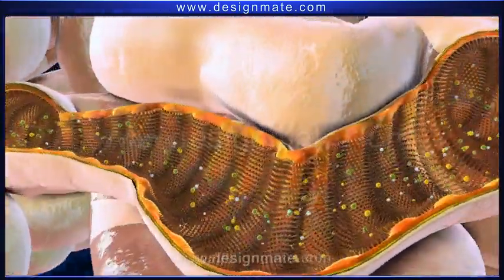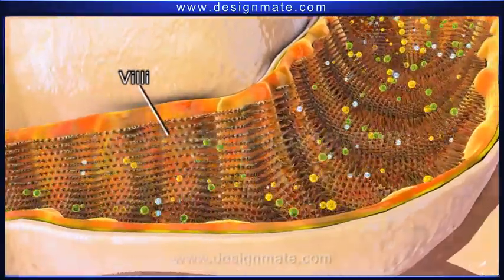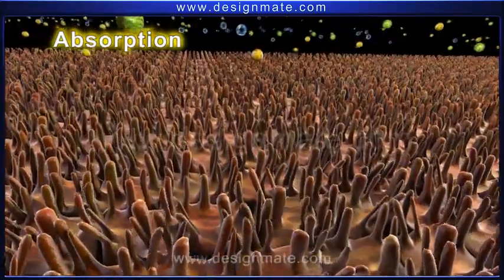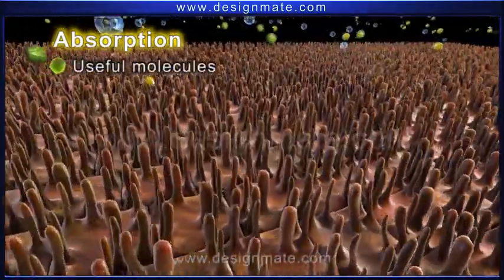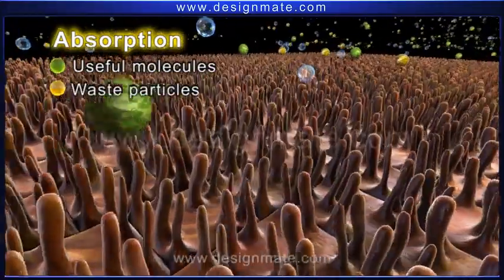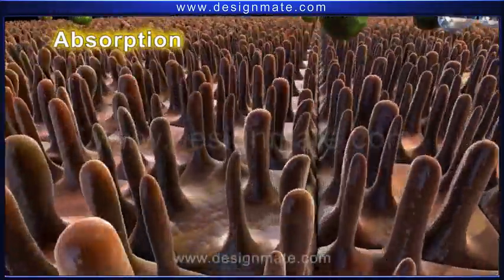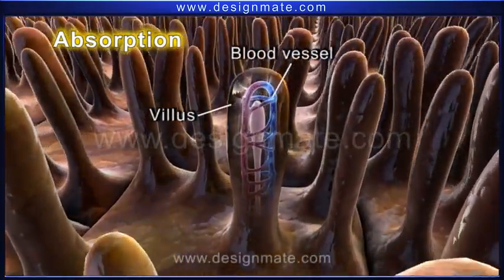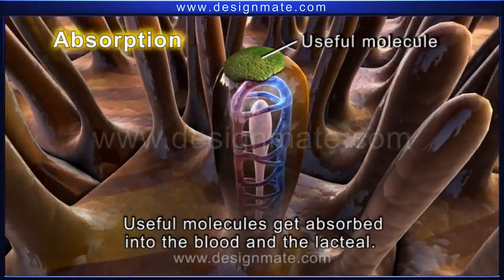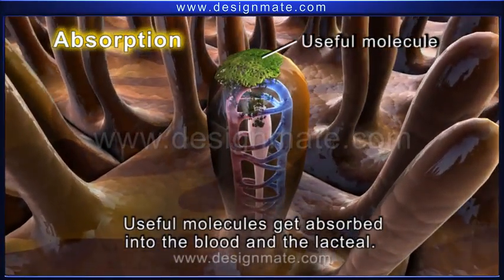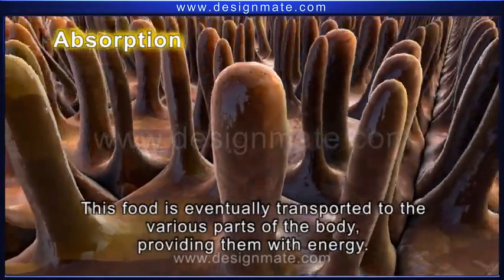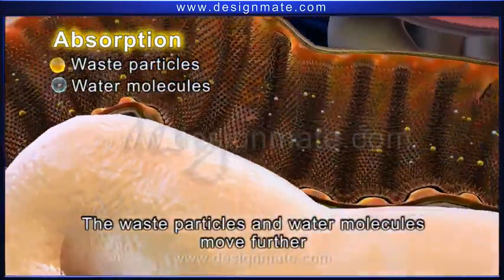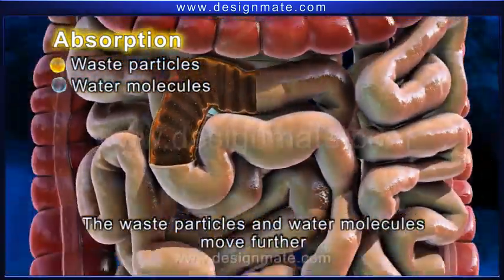A sectional view shows numerous villi on its inner surface. The digested simple food particles include the useful molecules, the waste particles, and some water molecules. A closer look at a villus shows the blood vessels and the lacteal. The useful molecules get absorbed into the blood and the lacteal, and this food is eventually transported to the various parts of the body providing them with energy.